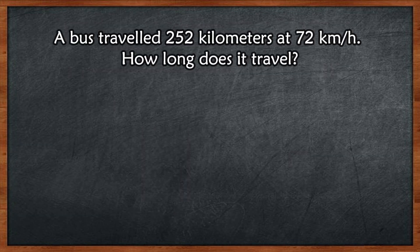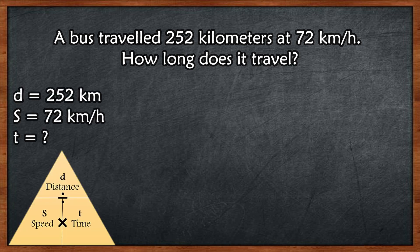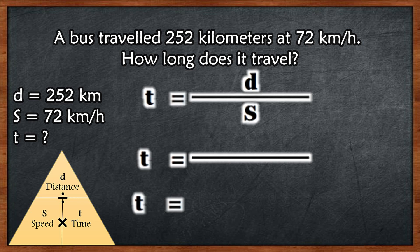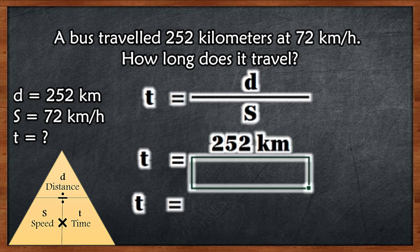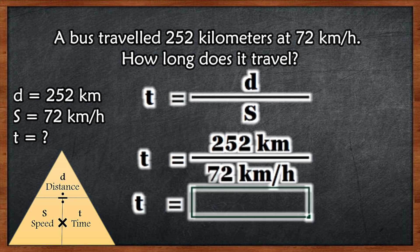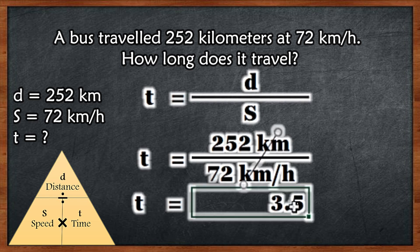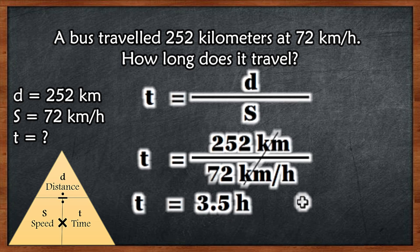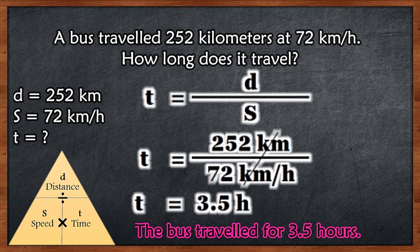Next example: A bus traveled 252 kilometers at 72 kilometers per hour. How long does it travel? Distance is equal to 252 kilometers, speed is 72 kilometers per hour, and time is missing. The formula for finding time is distance divided by speed: 252 kilometers over 72 kilometers per hour equals 3.5 hours. So the bus traveled for 3.5 hours.